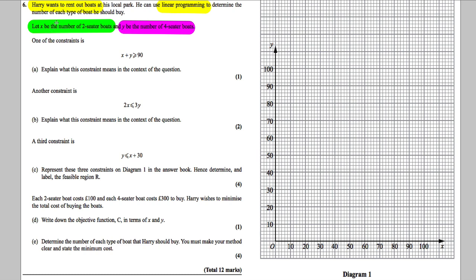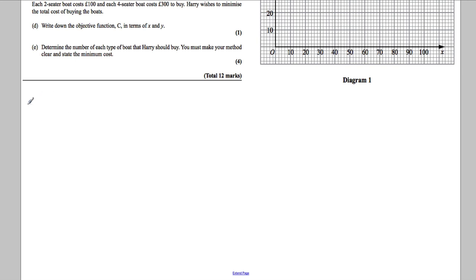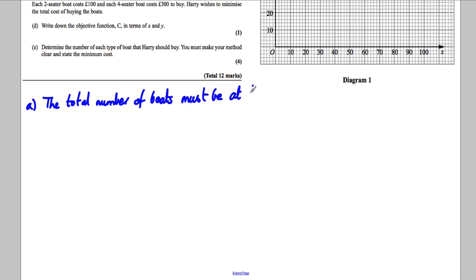If X is the number of 2-seater boats and Y is the number of 4-seater boats, X plus Y must be the total number of boats. And this is saying it must be at least — bigger than or equal to — at least 90. So the total number of boats must be at least 90.